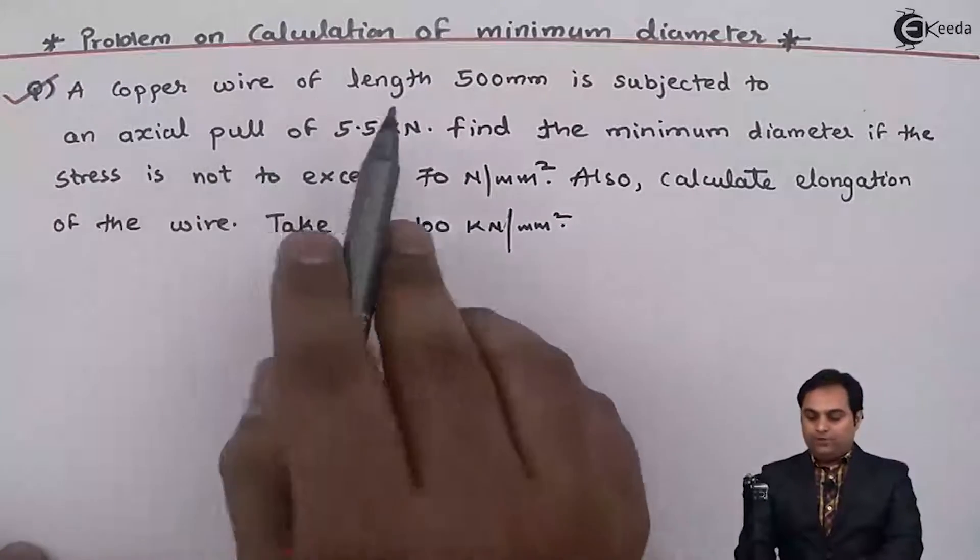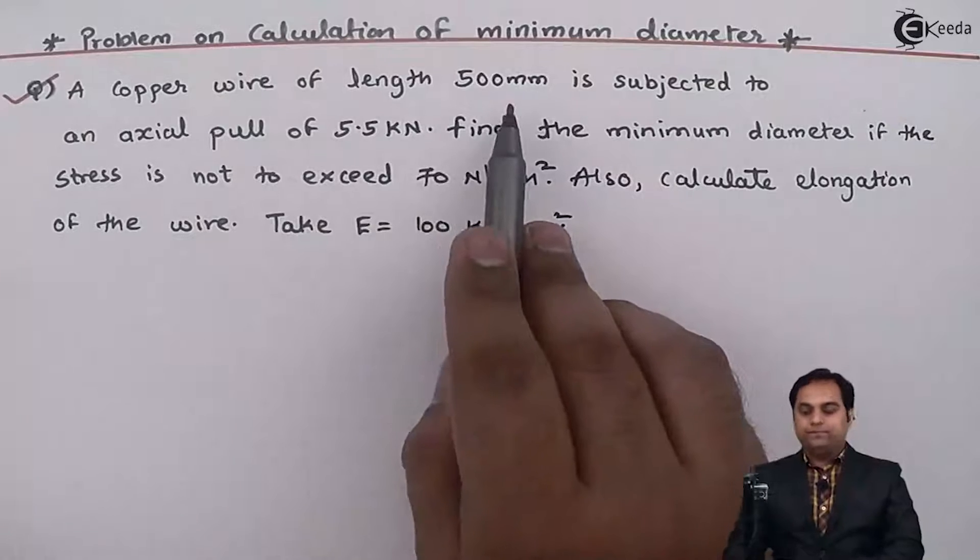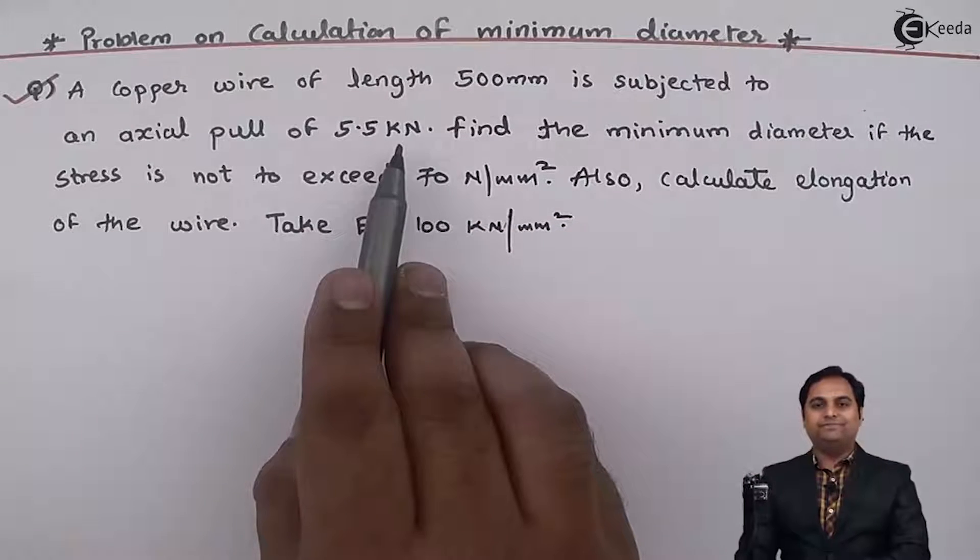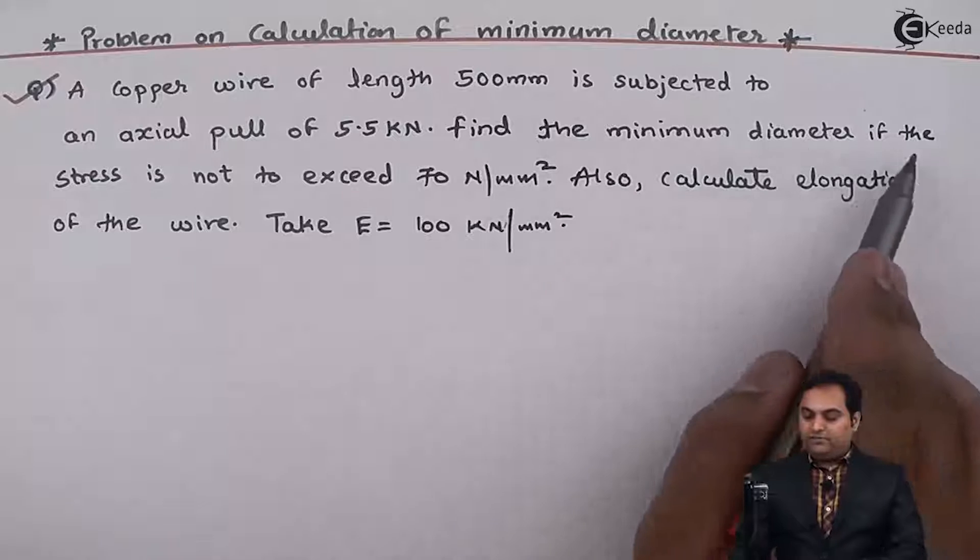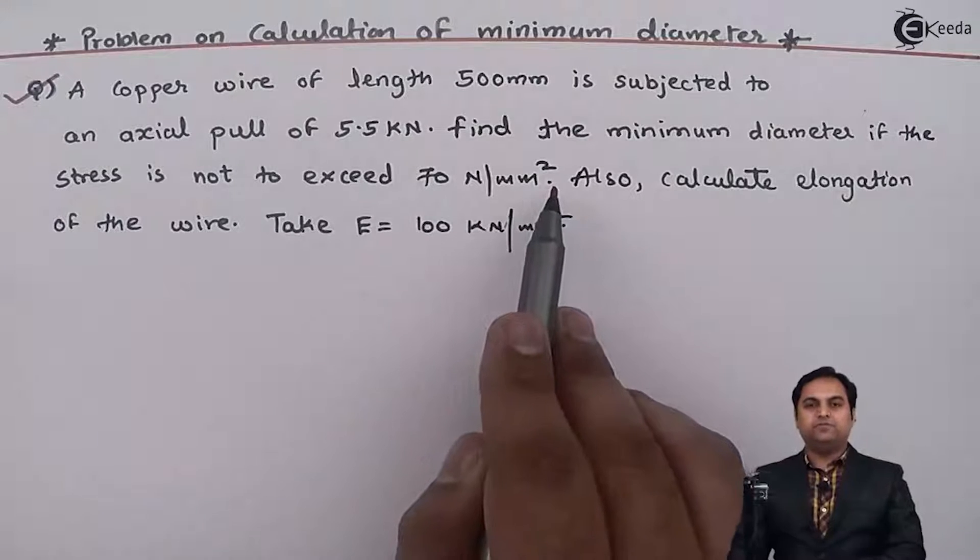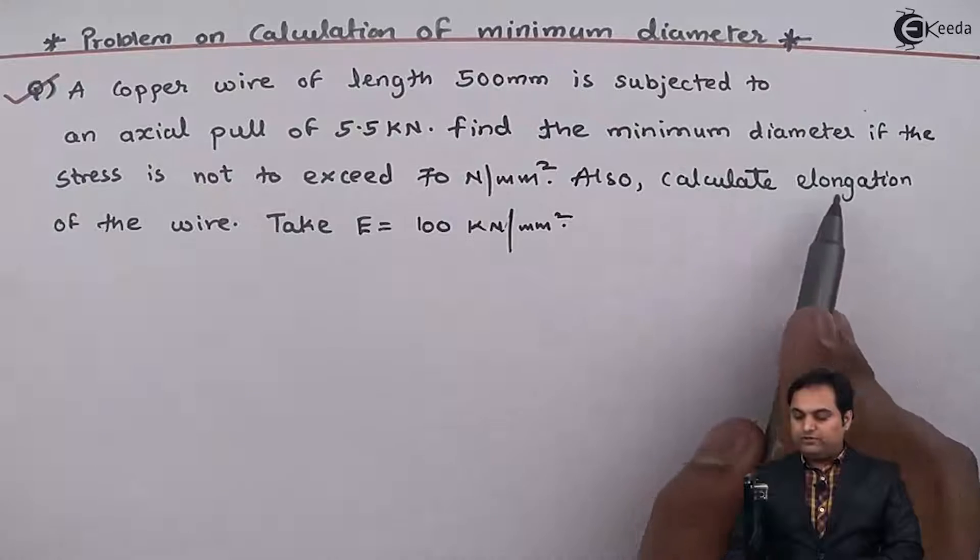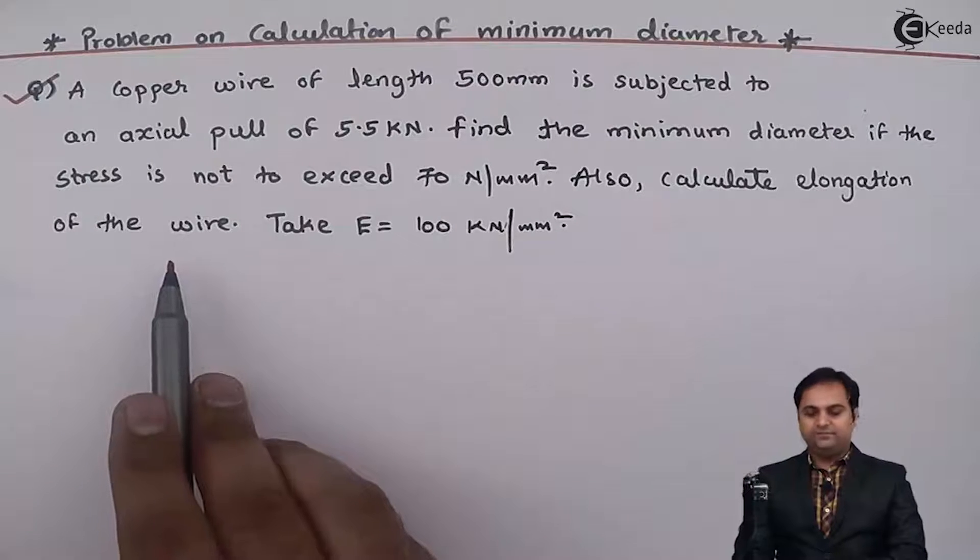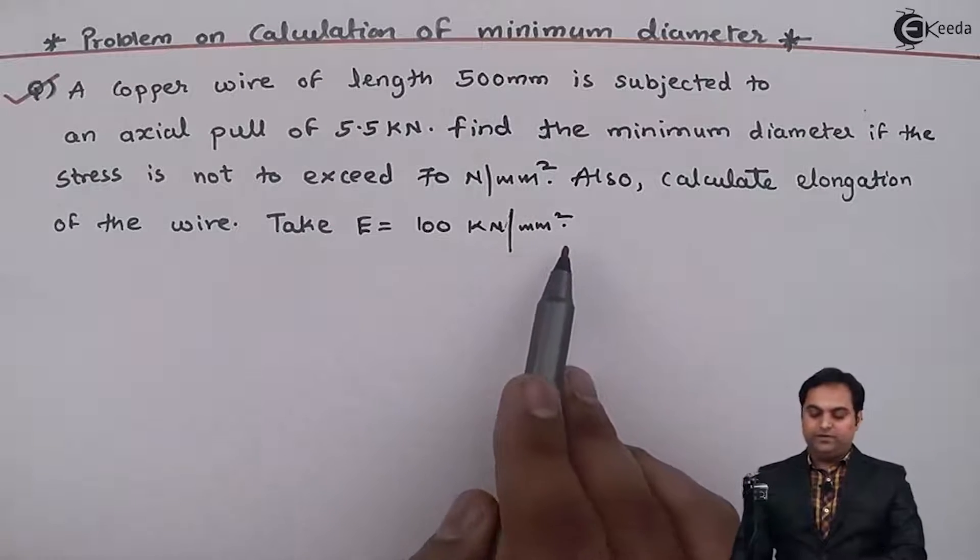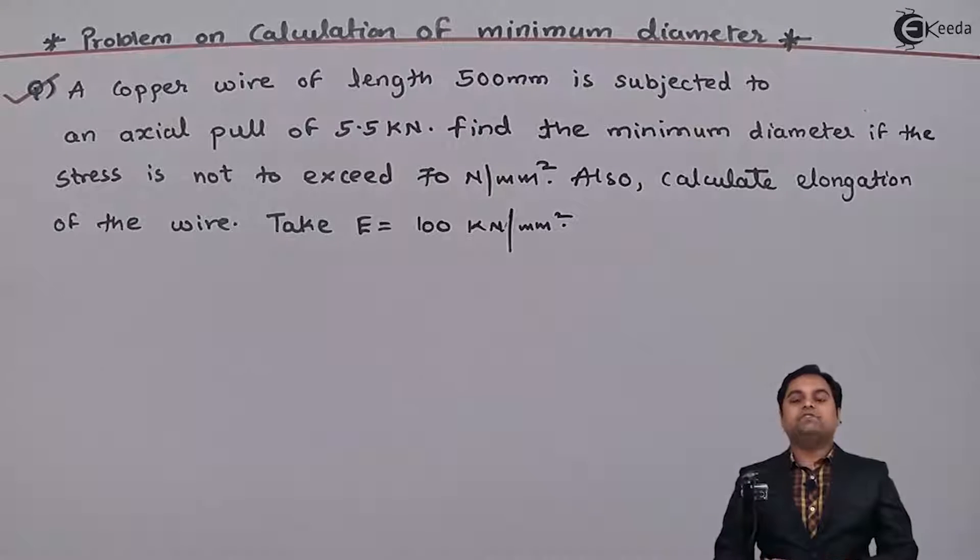A copper wire of length 500 mm is subjected to an axial pull of 5.5 kN. Find the minimum diameter if the stress is not to exceed 70 N per mm square. Also calculate elongation of the wire. Take capital E is equal to 100 kN per mm square. Now this is the question we have.